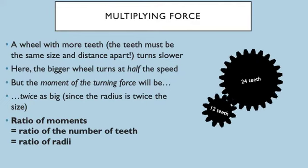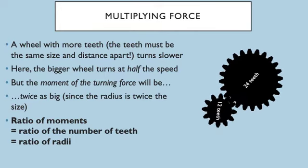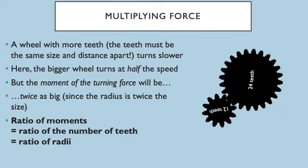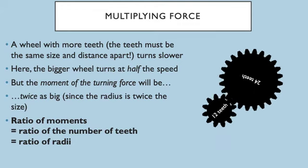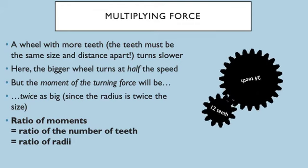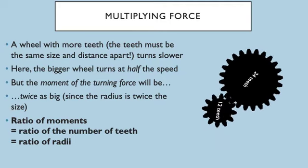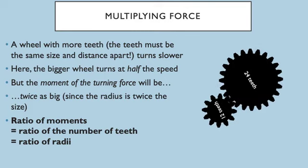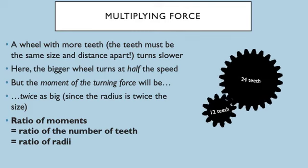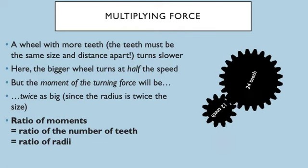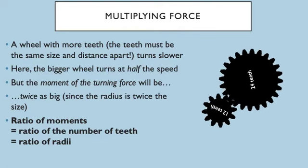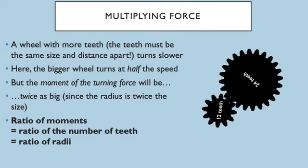So this is how we can work out the moments. We use a ratio—the ratio of the moments also equals the ratio of the number of teeth, because they've got to lock into each other, and that also equals the ratio of the radii. You could also look at the ratio of the diameters or the ratio of the circumference. All of those would work and that will tell us how much the difference in moments would be from one wheel to the next.